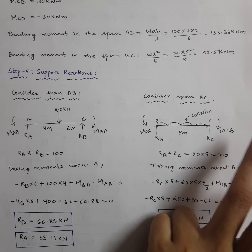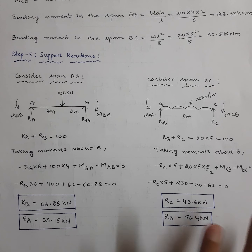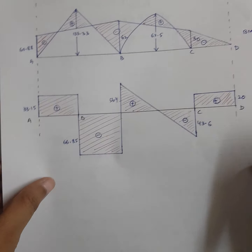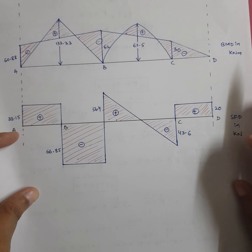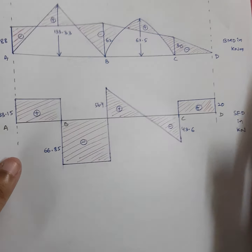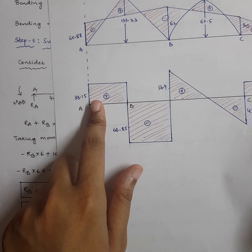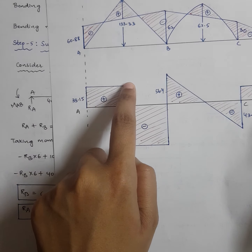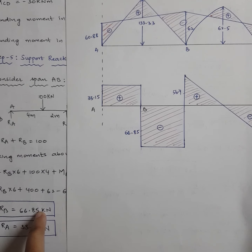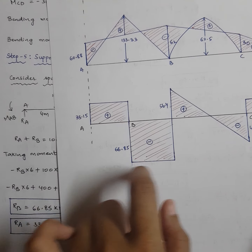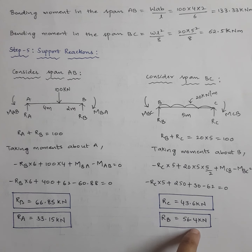For span BC: R_B + R_C = 20 × 5 = 100 kN. Take moments about B: minus R_C × 5 + 20 × 5 × 5/2 + M_CB − M_BC = 0. The moment from the overhang is already included in M_CB, so do not add it again. Solve to get R_C and R_B. Using the sign convention — left-side upward positive, right-side upward negative — draw the SFD: R_A = 33.15 upward, giving 33.15 until the point load.